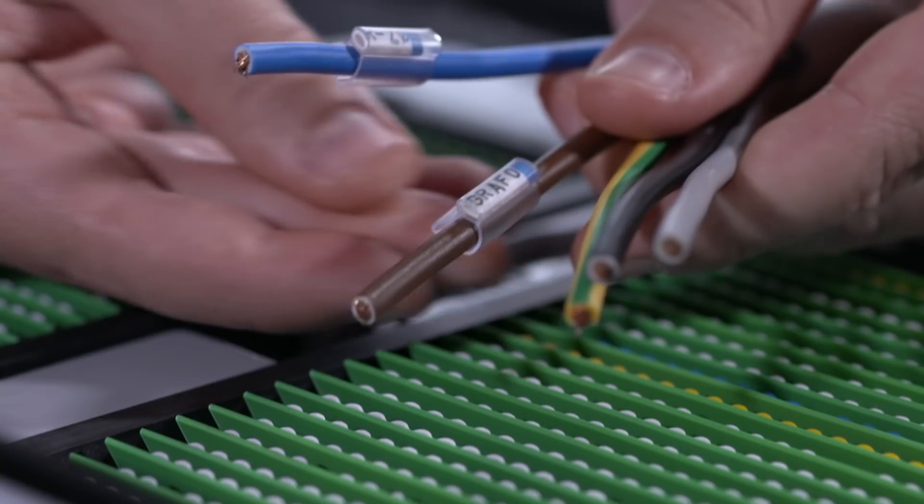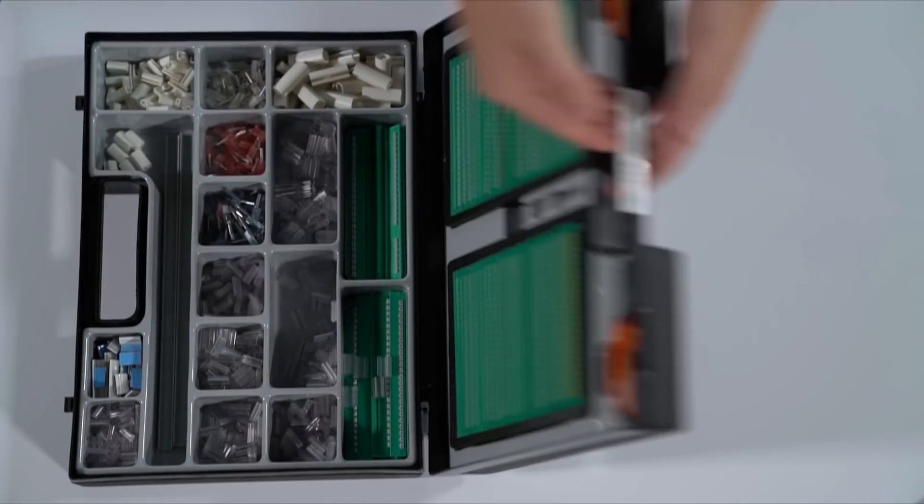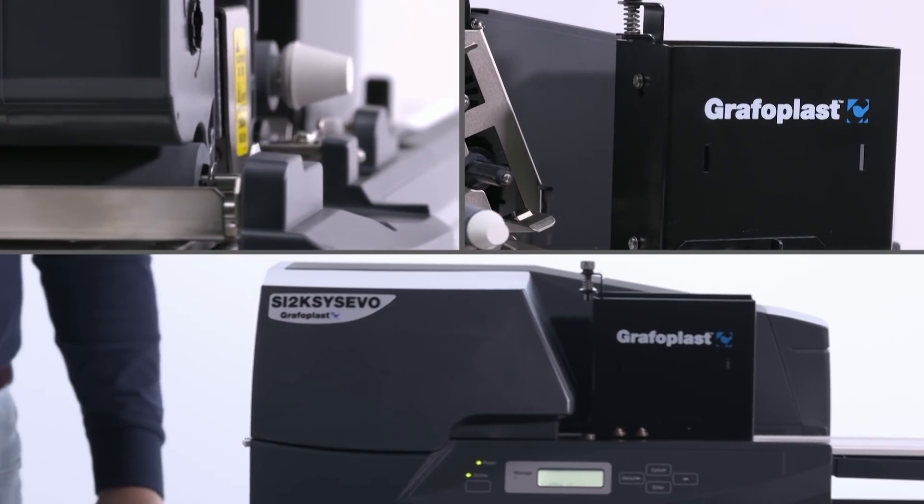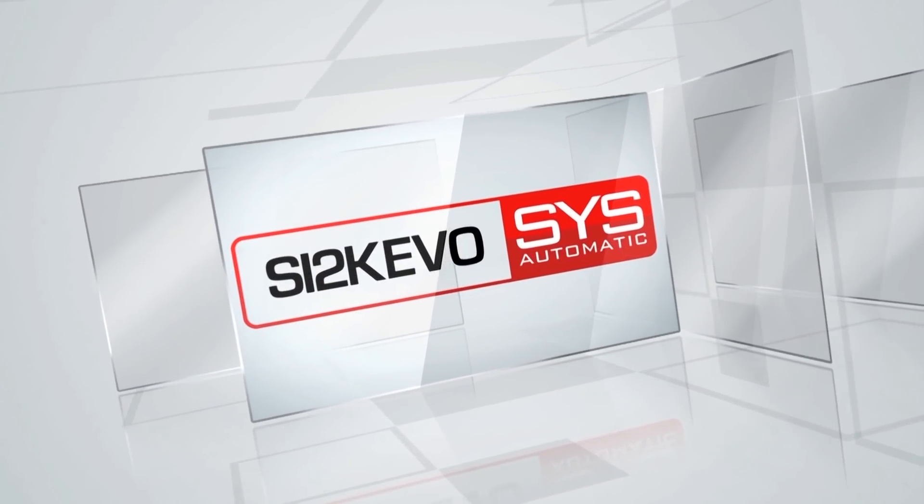A clear, lasting marking which has evolved from the TRASP manual system into the totally automated SI2K EVO printer.